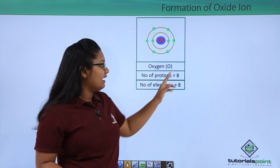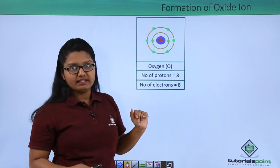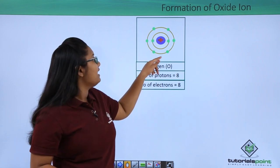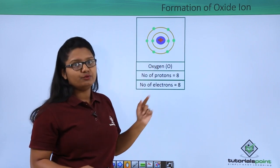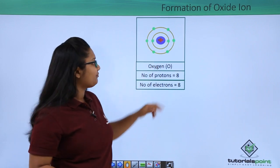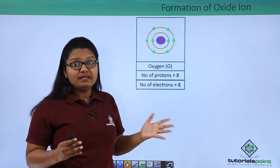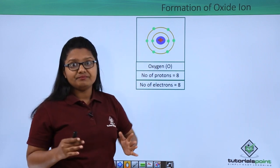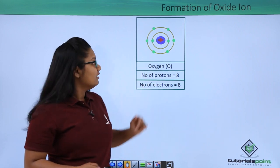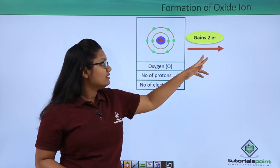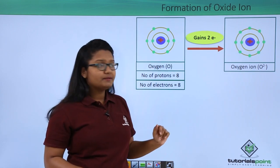A neutral oxygen atom has eight protons and eight electrons which nullify each other. The innermost shell is completely filled with two electrons, and the next shell has six electrons — meaning it is not completely filled. It needs two more electrons to become completely filled, so it gains two electrons.